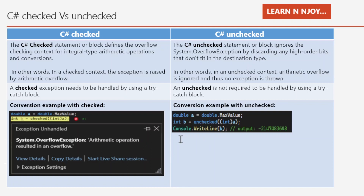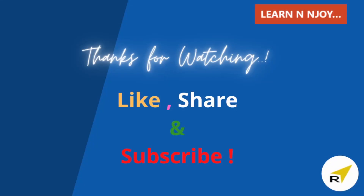That brings me to the end of this session. To sum up, in this video we saw what C# checked and unchecked keywords are and how and when to use them, and we talked about the differences between checked and unchecked in C#. If you liked this video, hit the like button, share it with your friends and colleagues, and subscribe to my channel. Thanks for watching — see you in the next video.